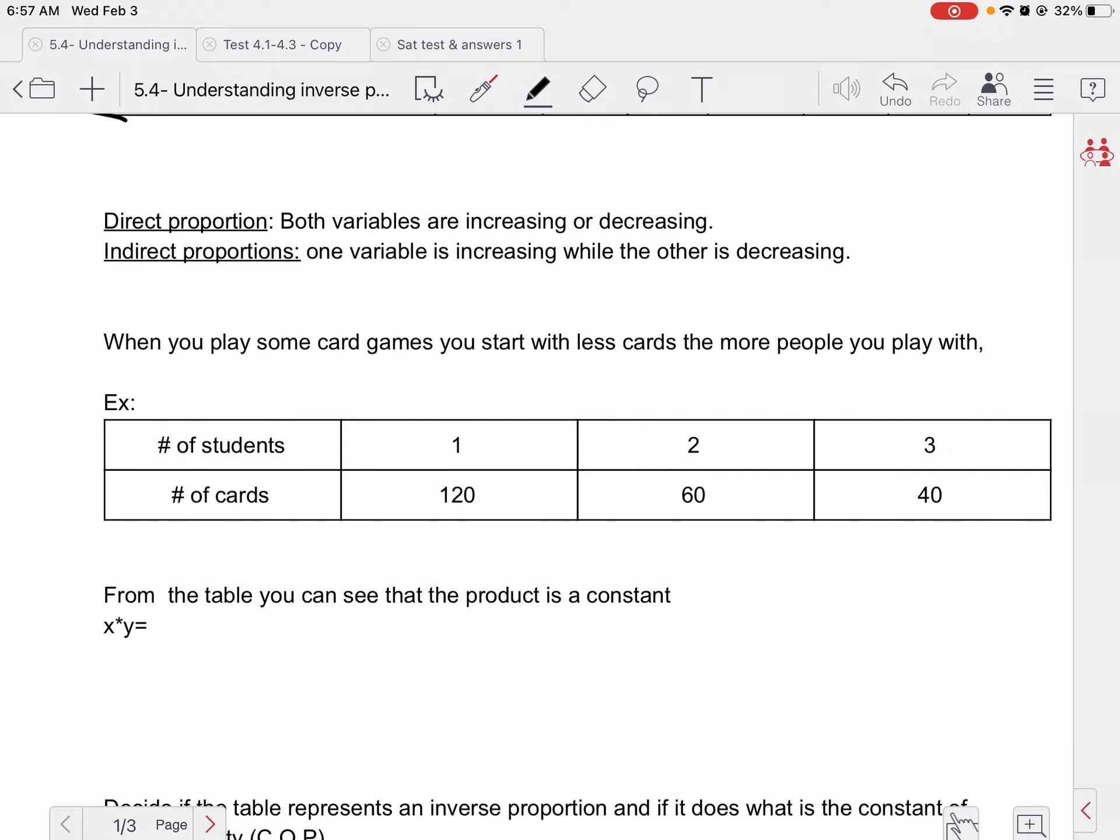So if we look at when we're playing a card game, if only one person is playing, that person will get 120 cards. But if two people are playing, they'll each get 60 cards. If three people are playing, they'll each get 40 cards. So this is a game you could play with one, two, or three people.